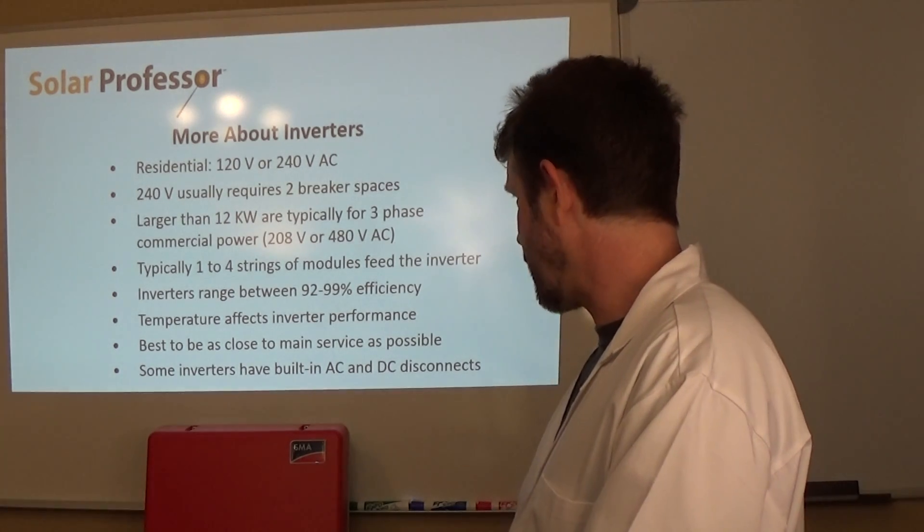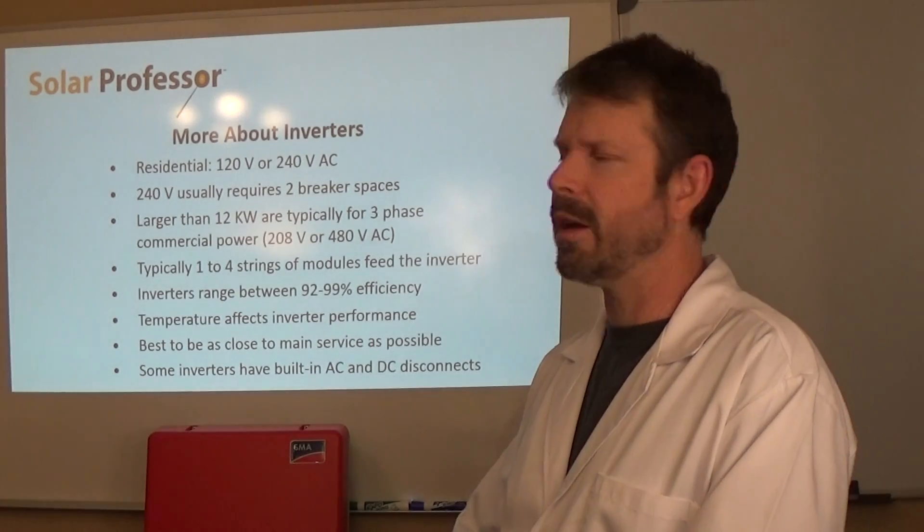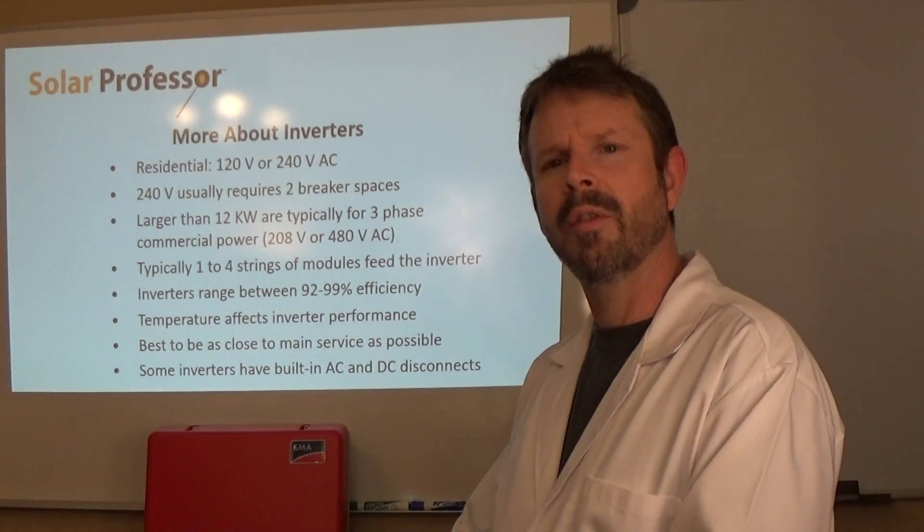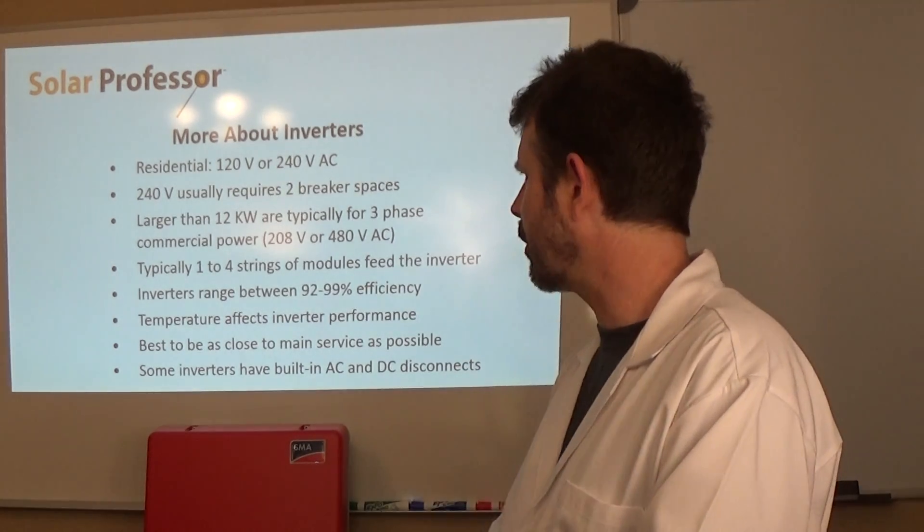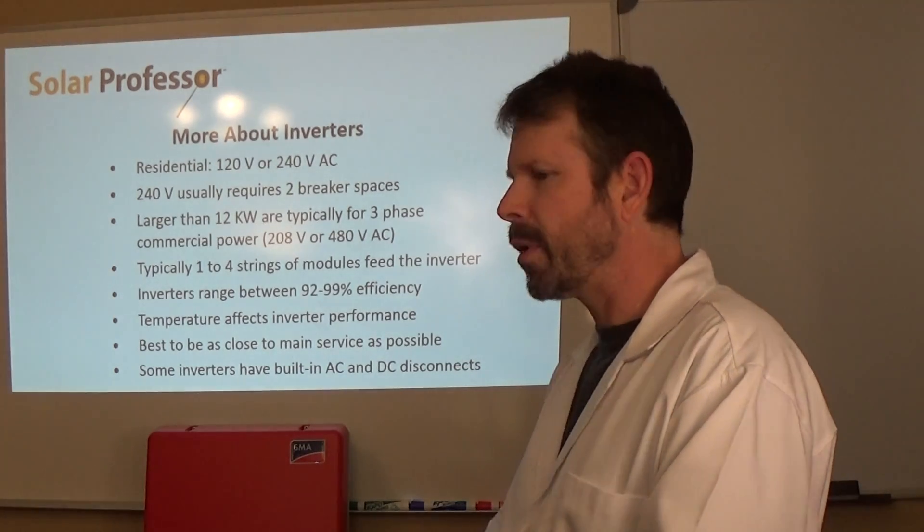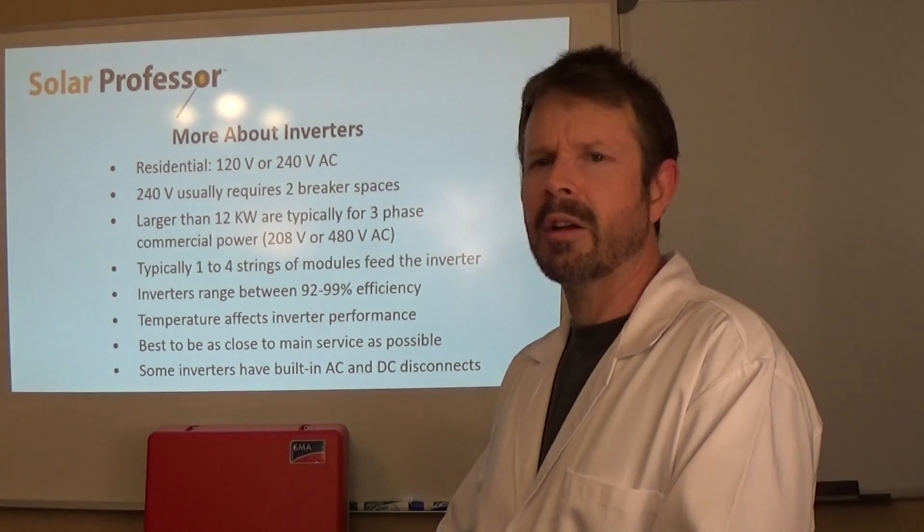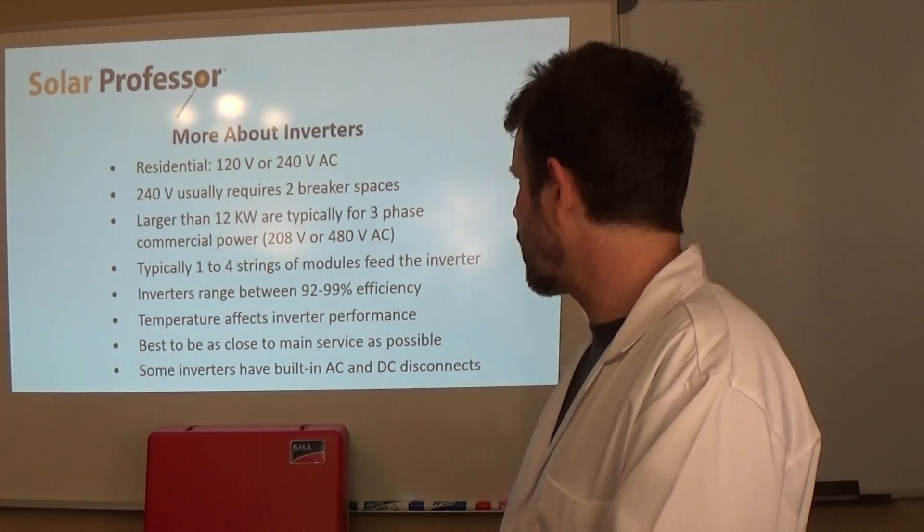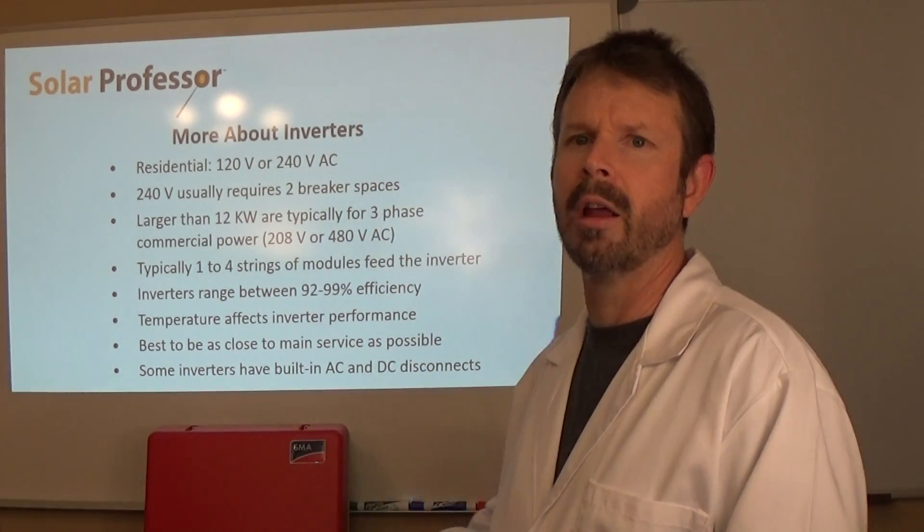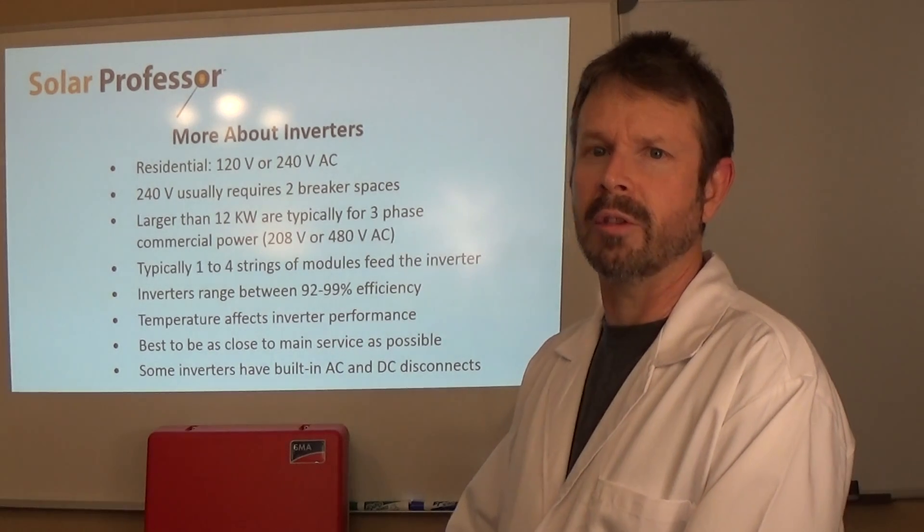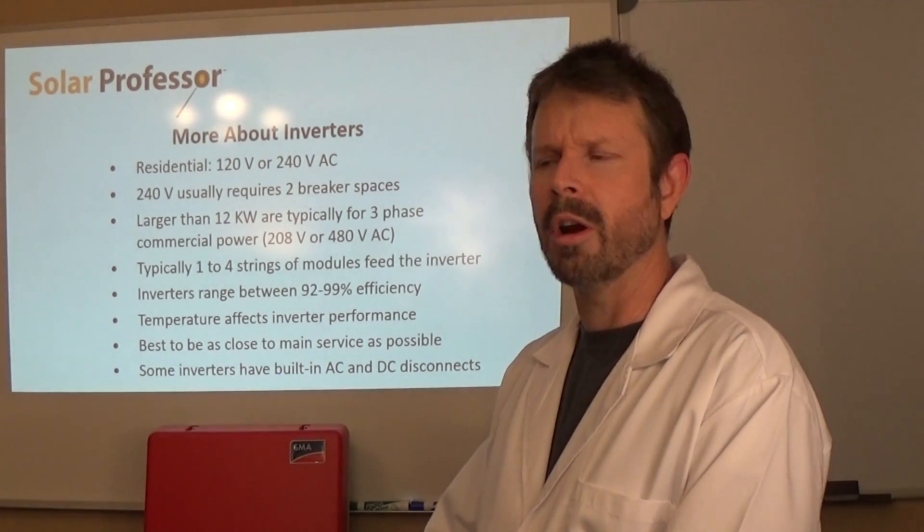Typically one to four strings of modules can feed the inverter and it depends if you choose to do a combiner box or not. Inverters range between 92% efficiency, some of the older off-grid inverters were 85% efficient. Inverter technology has come quite a long way in the past 10 years and we're getting inverters that are almost 99% efficient. That means its ability to convert from direct current to alternating current, 99% efficiency is pretty darn good.